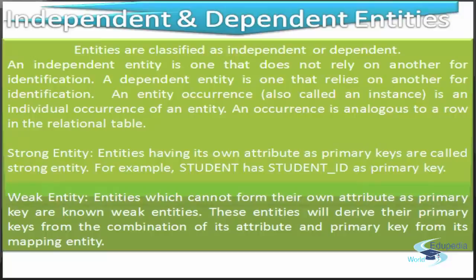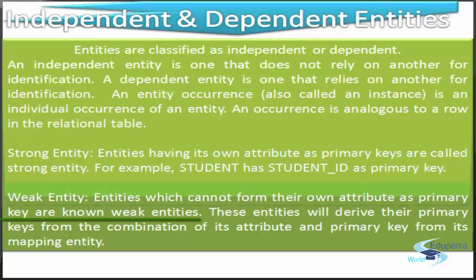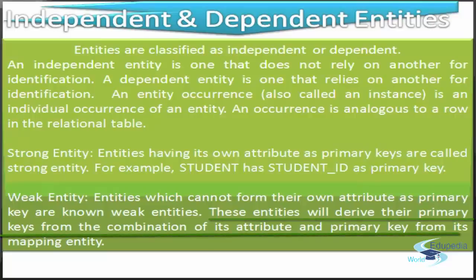When we talk about weak entities, those entities which cannot have their own attribute as a primary key are known as weak entities. These entities will derive their primary keys from the combination of their own attribute and the primary key of their mapping entity.